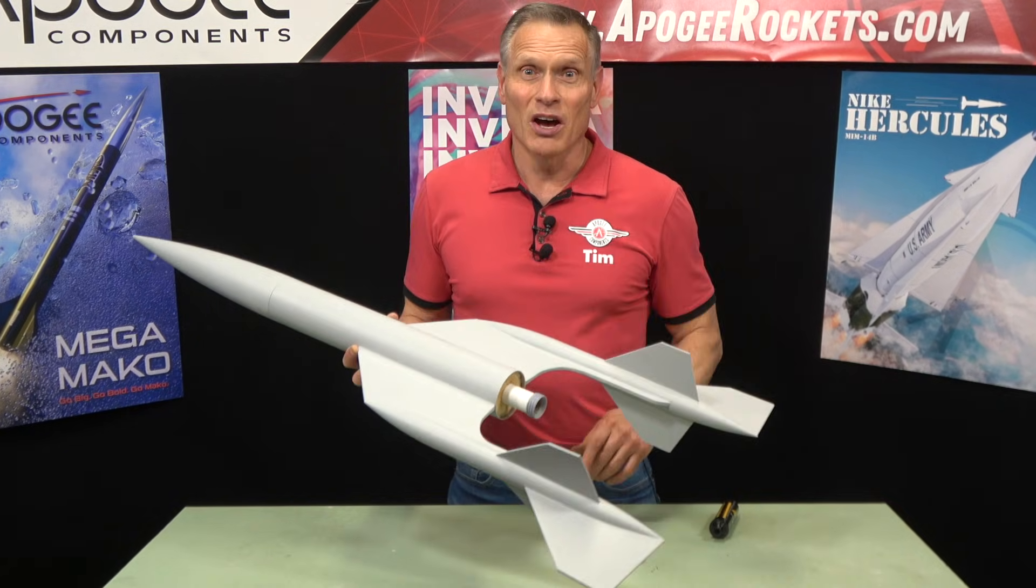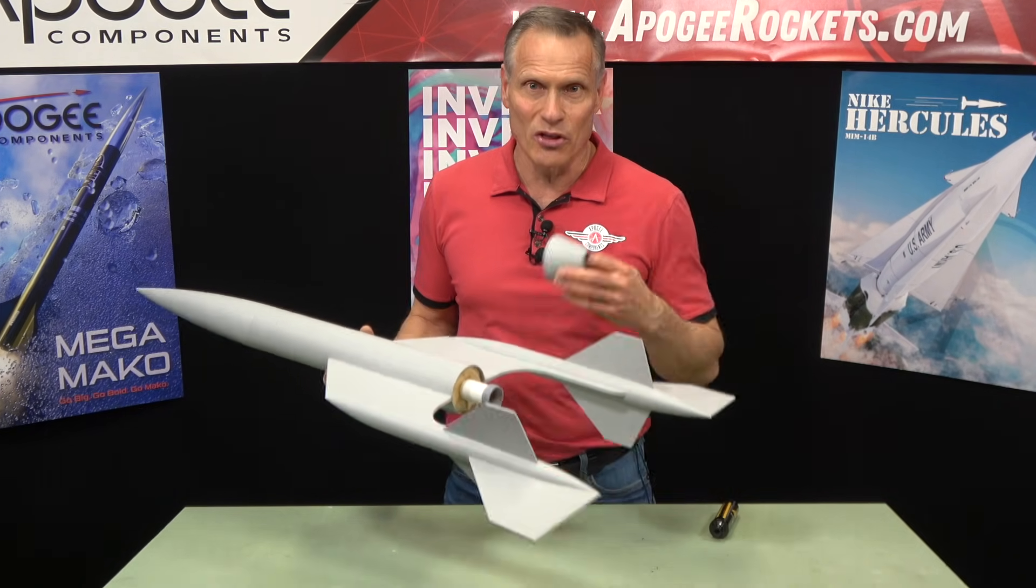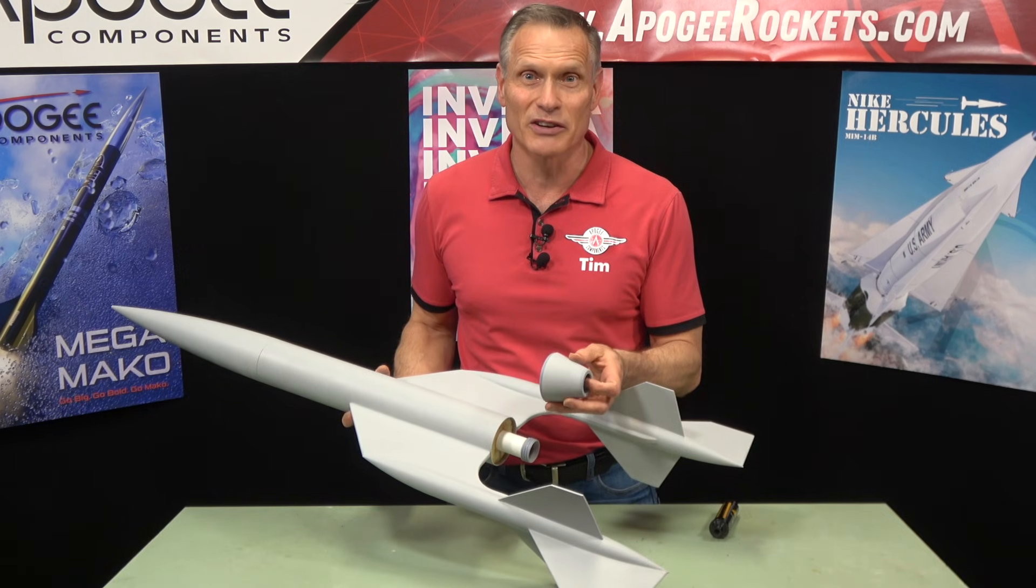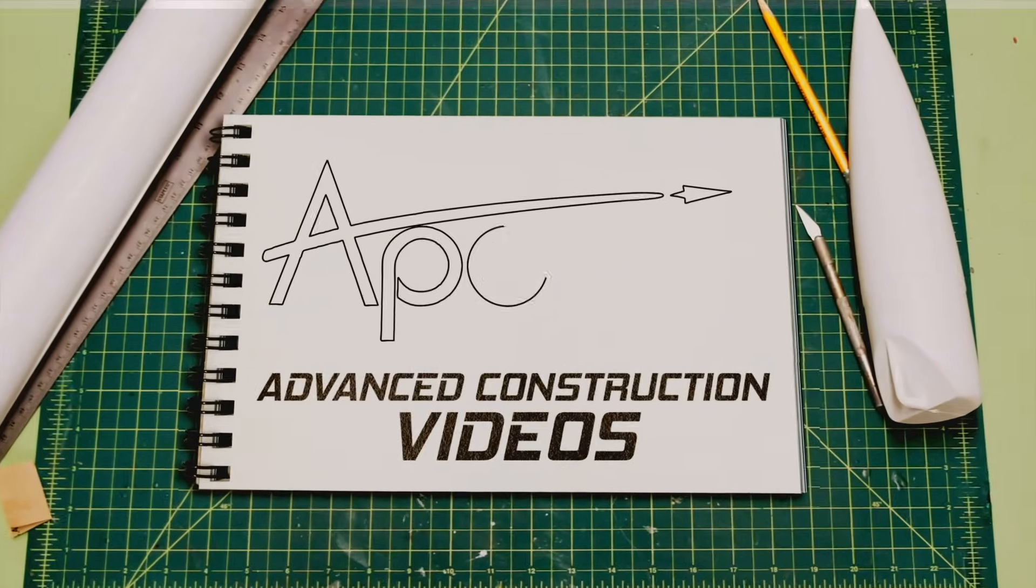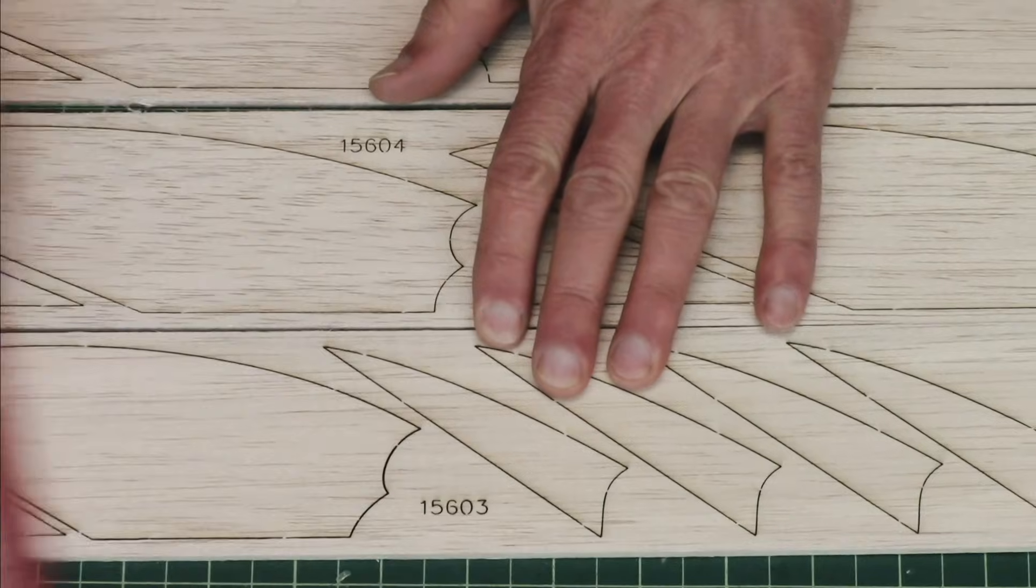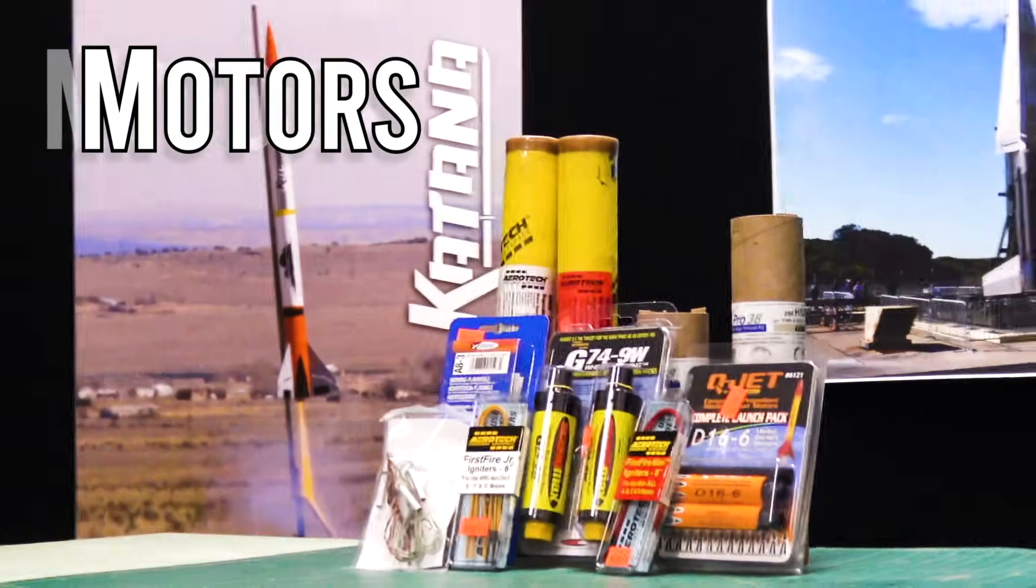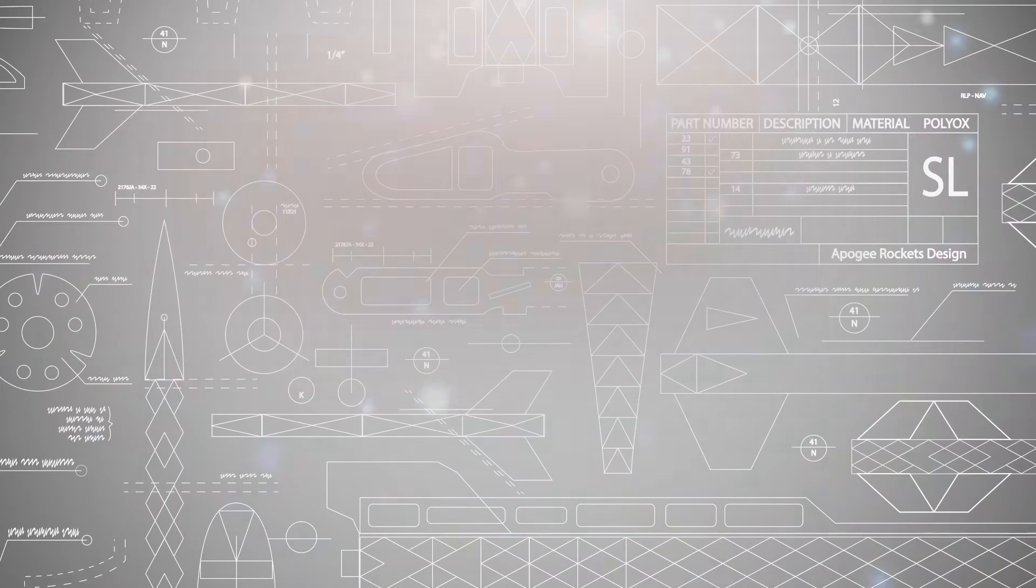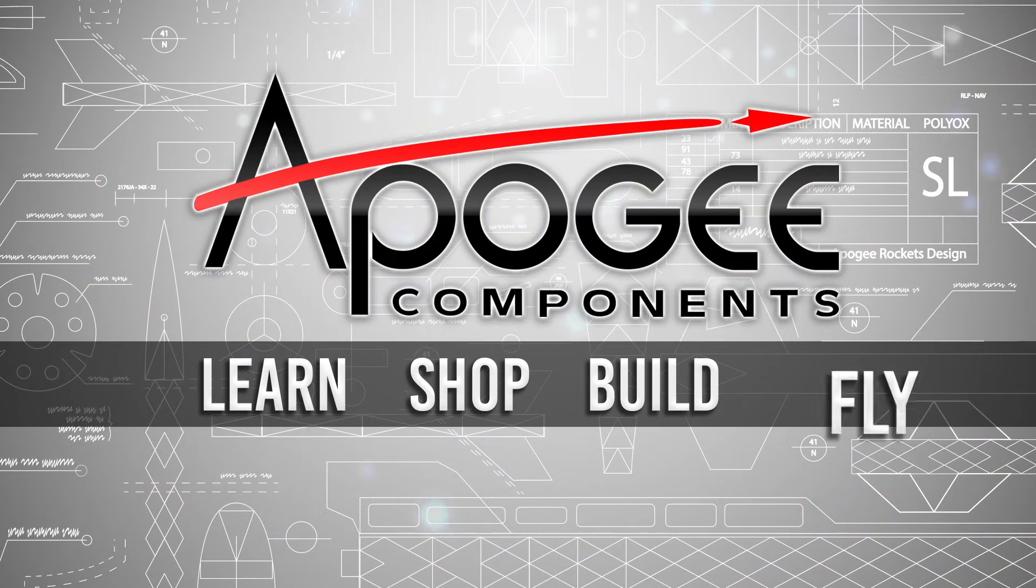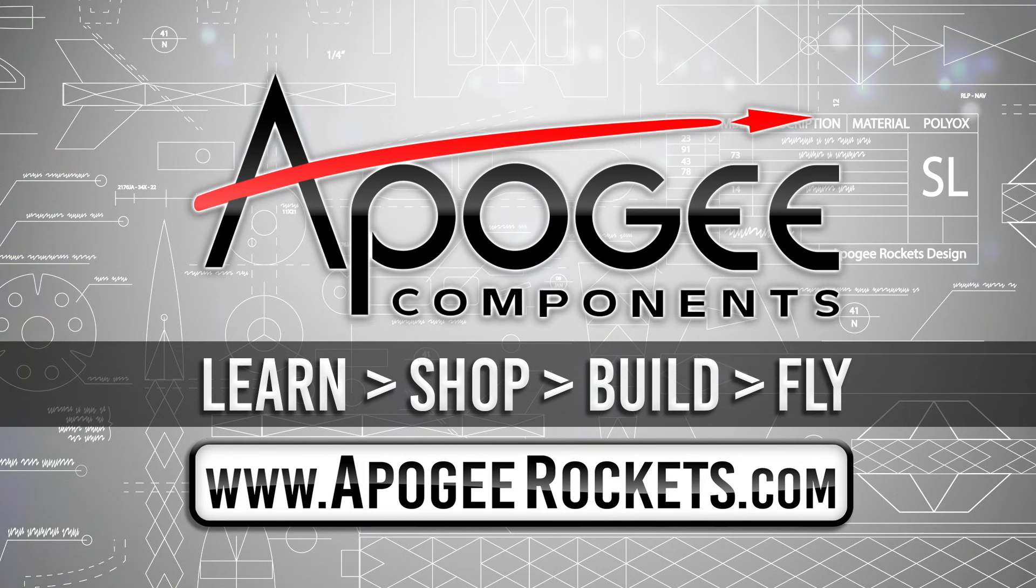So here's the video on how to install the tail cone engine retainer. Welcome to advanced construction videos where we show you how to tackle rocketry building techniques and more. On our website we sell kits, motors, building supplies and electronics. So come and learn, shop, build and fly when you visit us at apogeerockets.com.